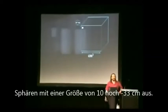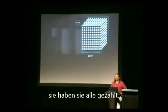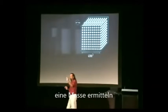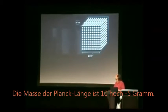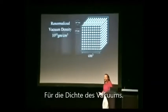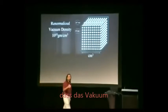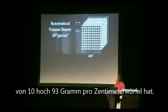They made little vibrations of 10 to the minus 33 centimeters. They stuck them all in a centimeter cube of space, they counted them all. And since, for a vibrational rate, you can get a mass — how much it weighs. The mass of the Planck's distance is 10 to the minus 5 grams. Then they added all the mass and got a density equation for the density of the vacuum. This means that the vacuum has a density of energy of 10 to the 93 grams per centimeter cube.